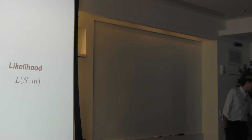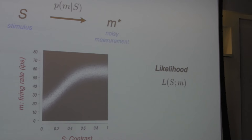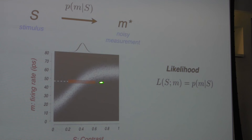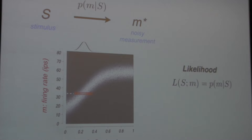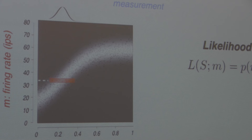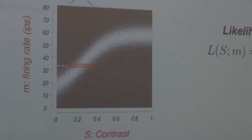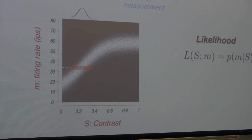To visualize this — the likelihood would be a horizontal line on the graph. We have a given measurement, and then a range of stimuli that characterize the likelihood of the stimulus. If we make a different measurement, the likely stimuli will change. You can imagine the brain might use this information: it receives input from neurons in the primary visual cortex, and from that it might be able to infer what the contrast of the stimulus is. Same for an experimenter.